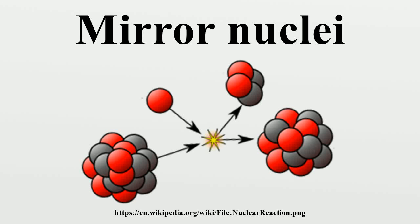Mirror nuclei are nuclei where the number of protons of element 1 equals the number of neutrons of element 2, the number of protons of element 2 equals the number of neutrons of element 1, and the mass number is the same. In short, Z1 equals N2 and Z2 equals N1.